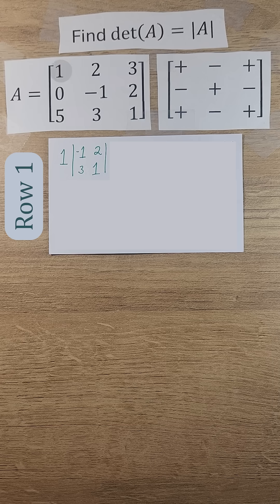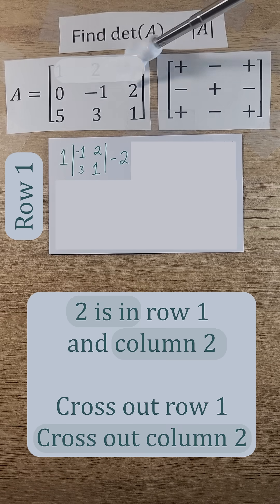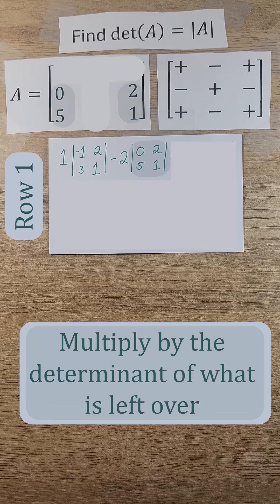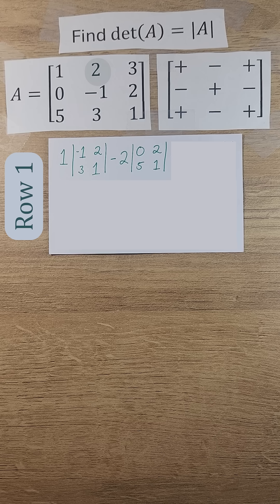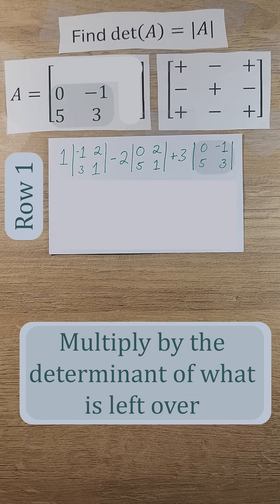We move on to our next position in our row, which is 2. We get the sign from the same position in the sign chart, then cross out the row and column where we found our 2 and multiply by the determinant of what is left over. We move on to our third value in our row, which is 3. We get the sign from the sign chart, cross out the row and column, and multiply by the determinant of what's left over.